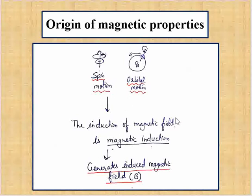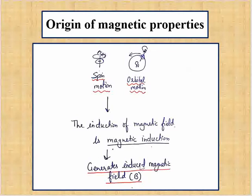The motion generates an induced magnetic field. This induced magnetic field is called B, and the applied magnetic field is called H. When we apply a magnetic field, the substance induces its own magnetic field.